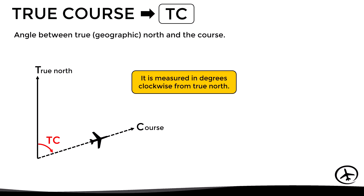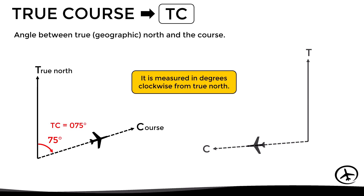For example, if the measured angle is 75 degrees then the true course is 075, and in another case if the measured angle is 264 degrees then the true course is 264.